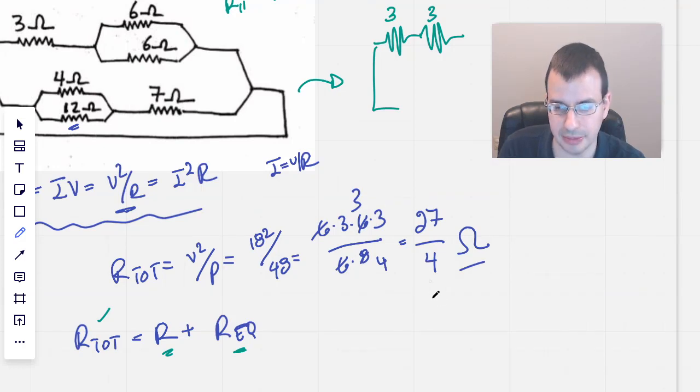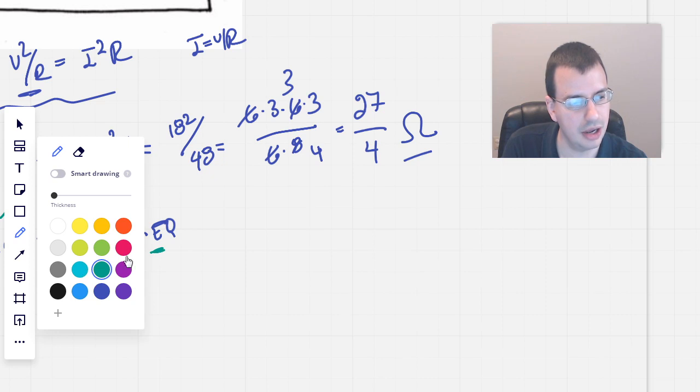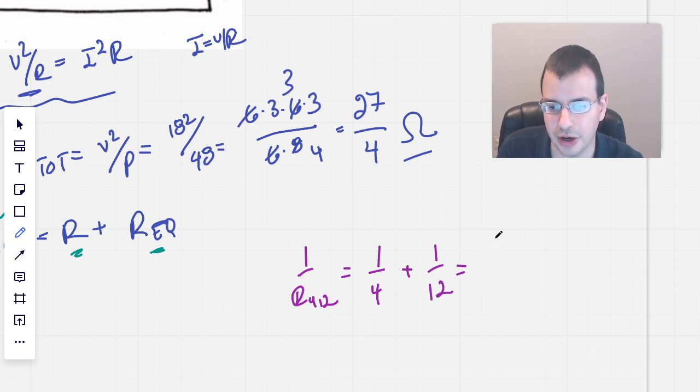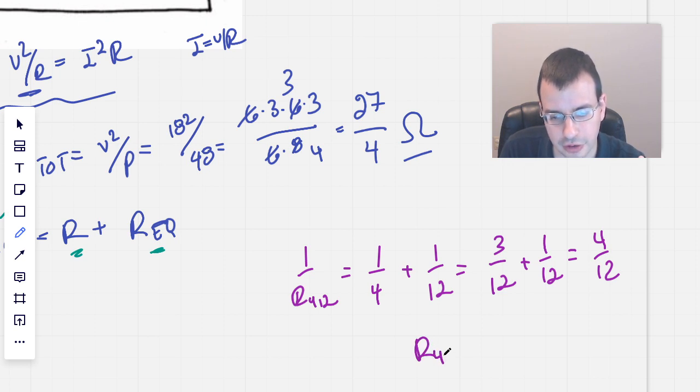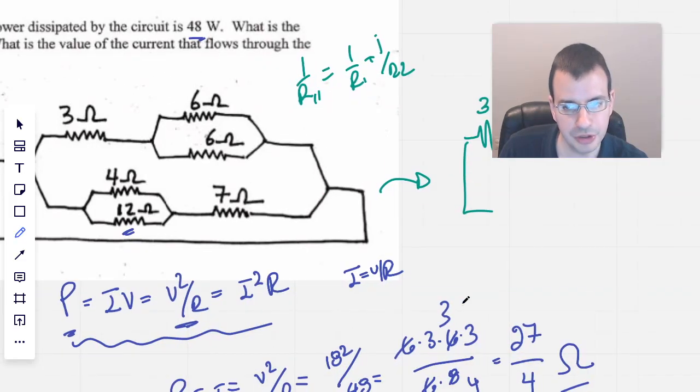We still have this 4 and 12. I'm going to reduce the 4 and 12 real quick. 1 over R equals 1 over 4 plus 1 over 12. Common denominator is 12. Multiply by 3, we get 3 over 12 plus 1 over 12, gives us 4 over 12. So R 4, 12 parallel is 1 third. This will also be 3 ohms. Very convenient.